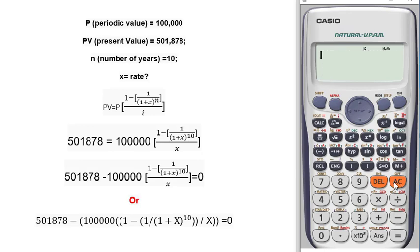Well, you can use this line as well instead of this one. I am showing you: 5, 2, 1, 8, 7, 8 minus. And you have to put all the brackets accordingly, otherwise it will not work.